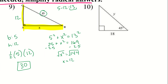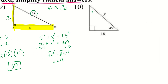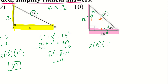For number 10, this is another special right triangle — we have 45 and 90, so the third angle is also 45 degrees. The ratios for a 45-45-90 are 1, 1, root 2. We only need the height and the base, so the y doesn't need to be solved. From 1 to 18 we multiply by 18, so the height is also 18. One-half times 18 times 18 gives 162, so 162 is the area for number 10.